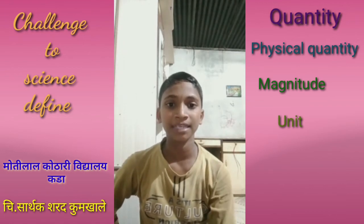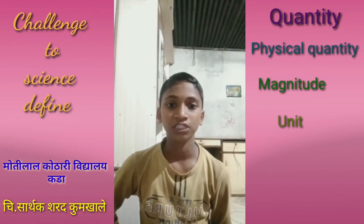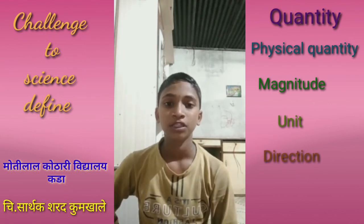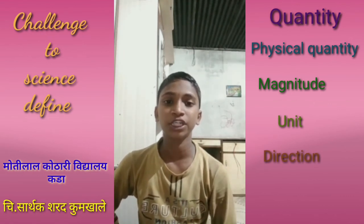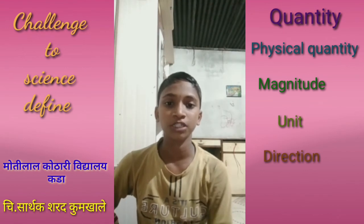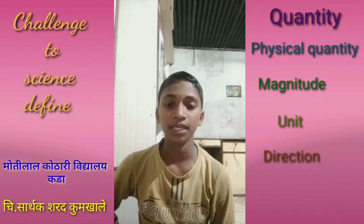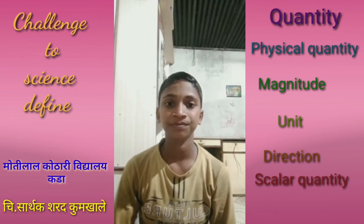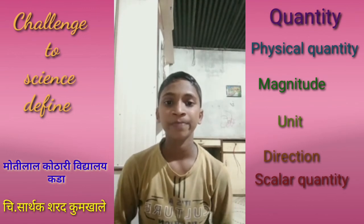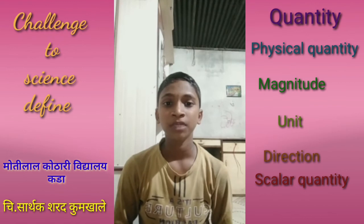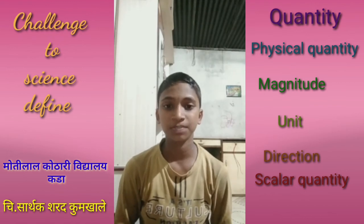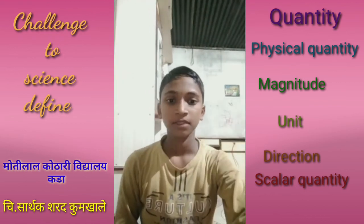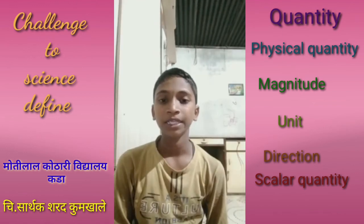Fifth: direction — the terms which are used to indicate the actual position of an object are called as direction. Sixth: scalar quantity — the quantity that can be expressed completely by magnitude alone is called as scalar quantity.